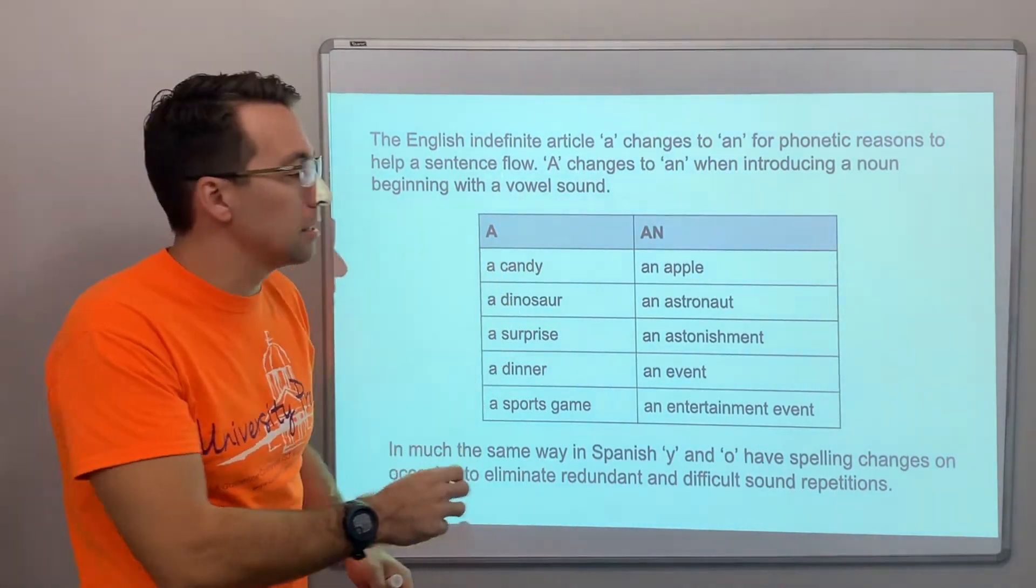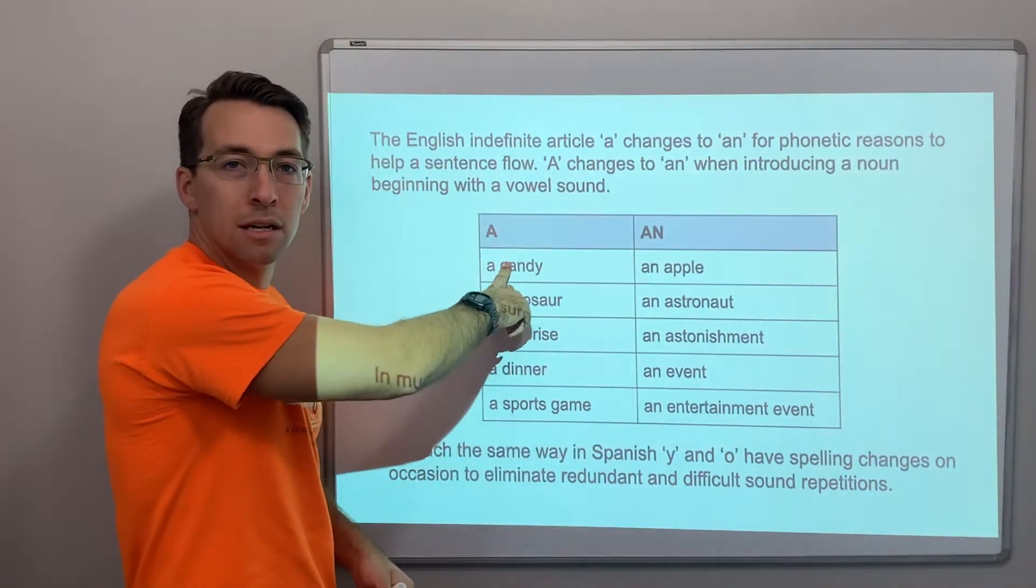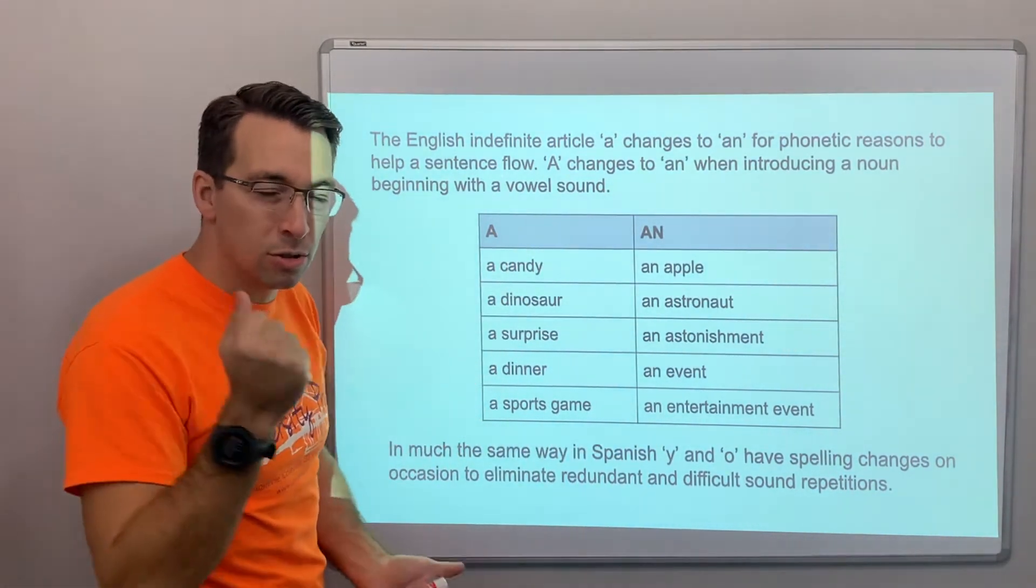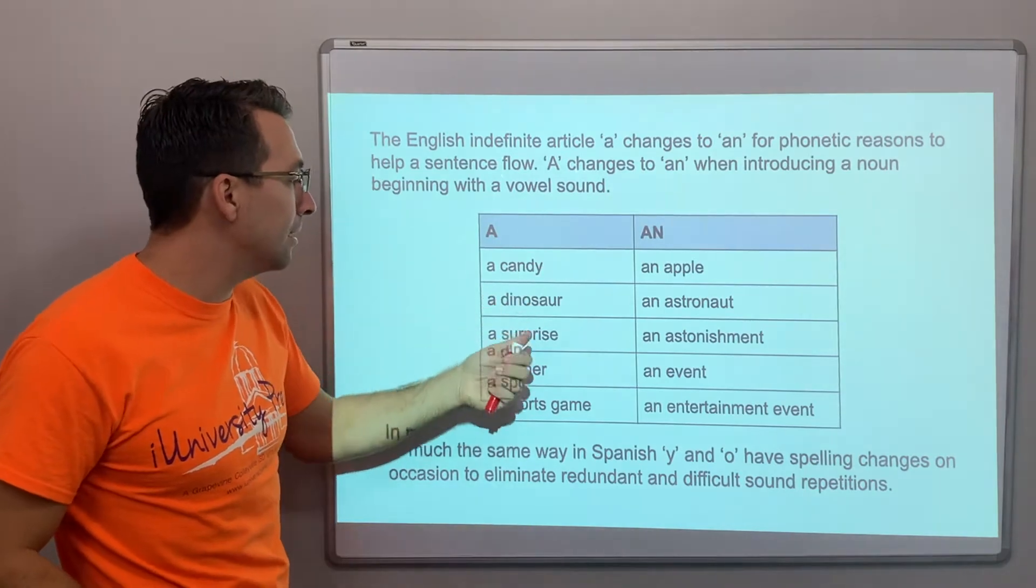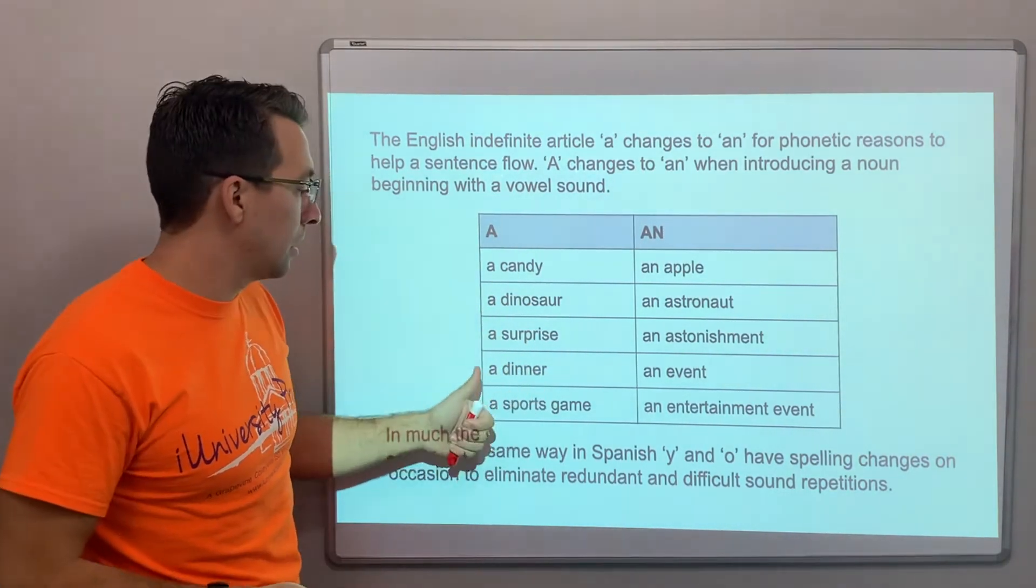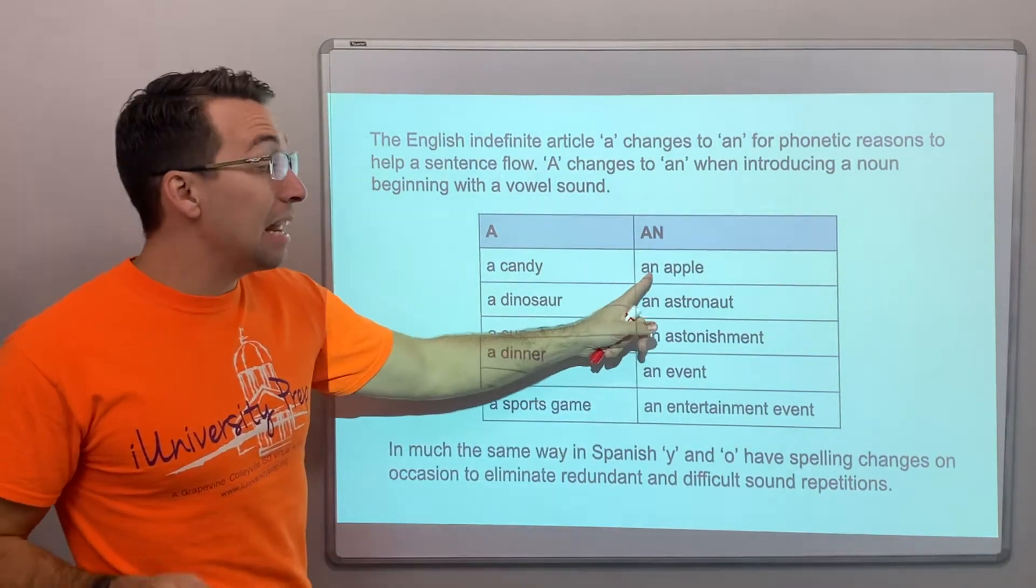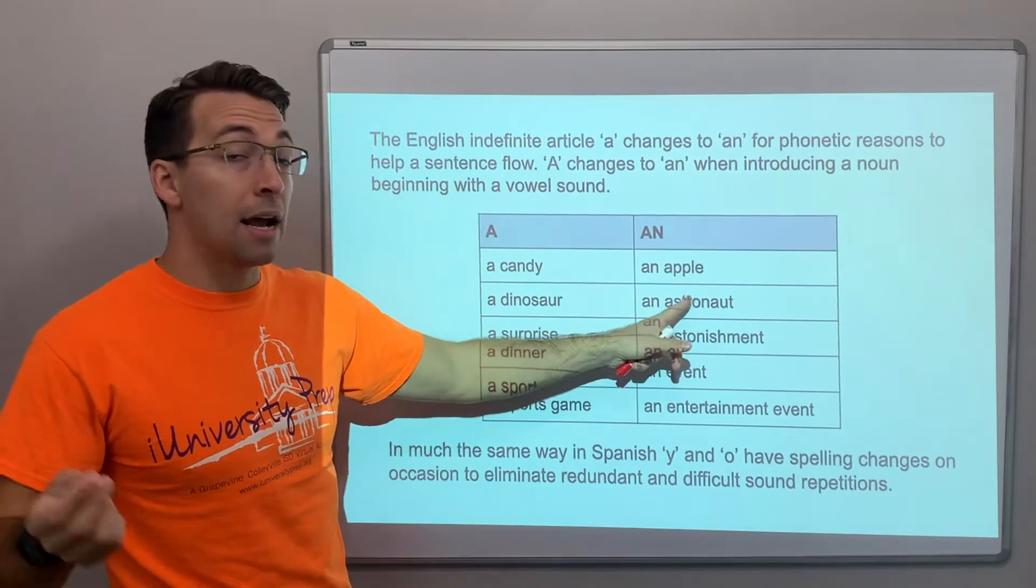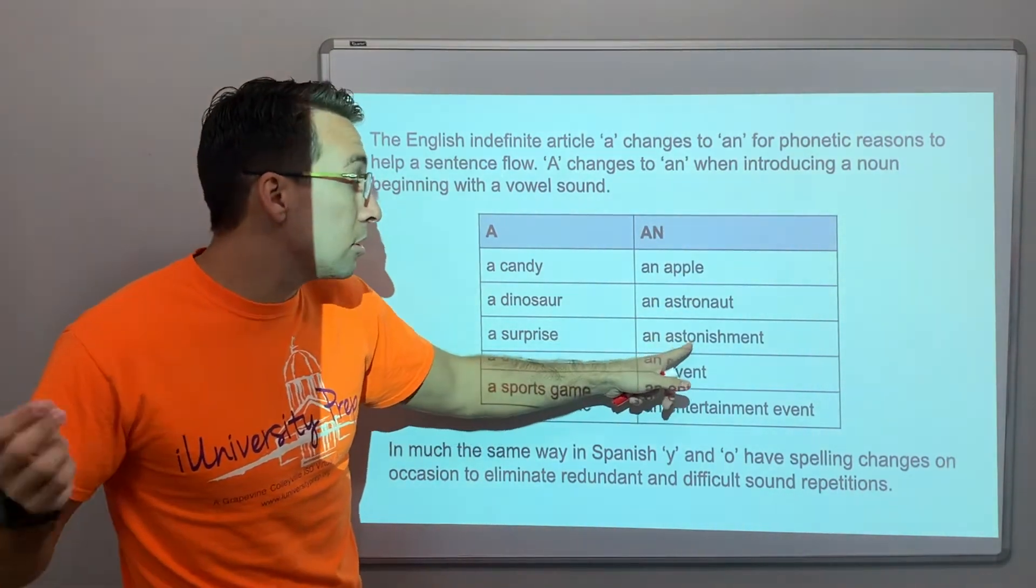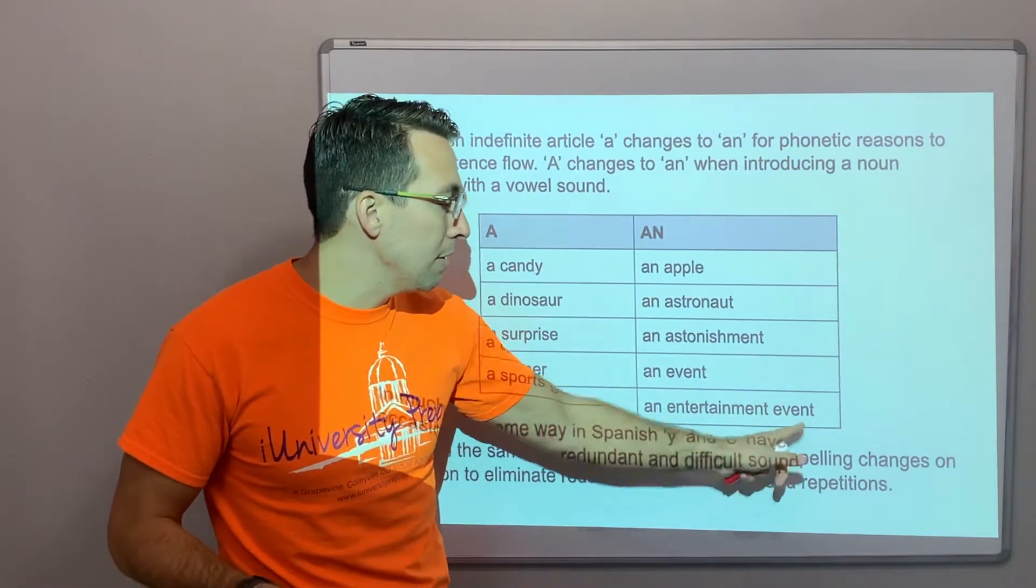Check this out. A candy versus an apple. Starts to the consonant, right? It starts to the hard sound, so it's a candy, a dinosaur, a surprise, a dinner, a sports game. But, an apple, an astronaut, an astonishment, an event, an entertainment event.